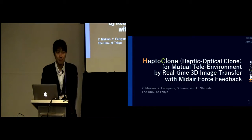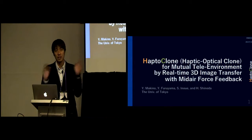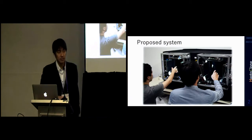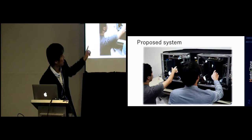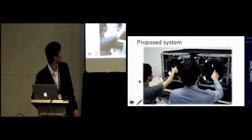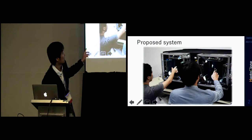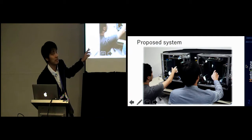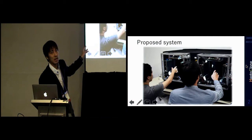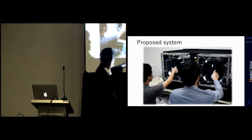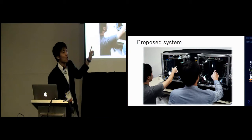Today I will talk about the Haptoclon, which is a mutual interactive system. This is the overview of our prototype system. The system has two workspaces. Due to the optical system, each hand inside the workspace can be seen on the other side as a 3D floating image, and he can see his hand inside the workspace.